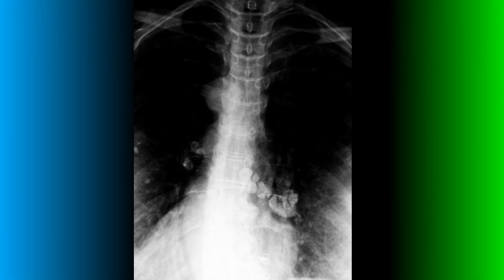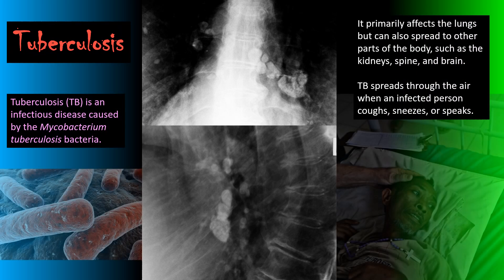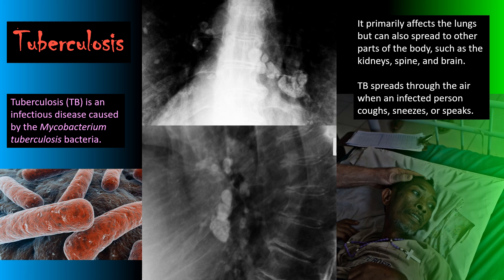On this frontal view of the thoracic spine, we're looking at one of the more common lung pathologies seen on x-ray. These multiple areas of soft tissue calcification are due to a previous exposure to a granulomatous disease — in this case, tuberculosis.